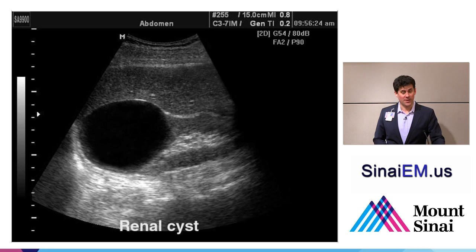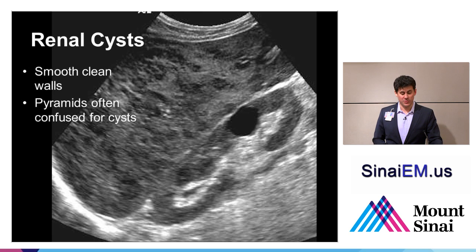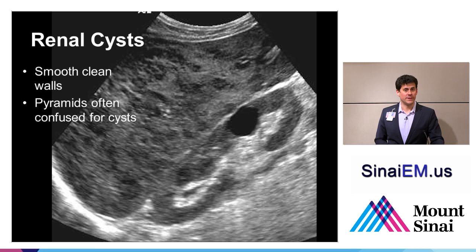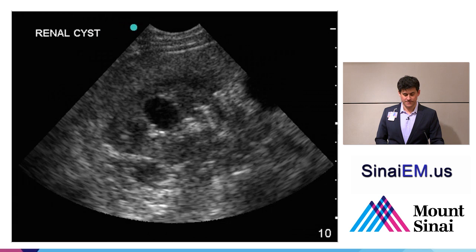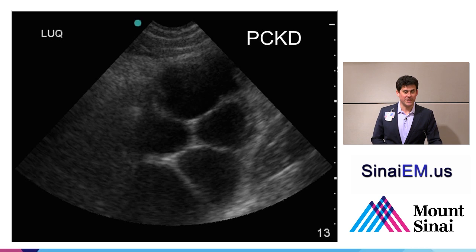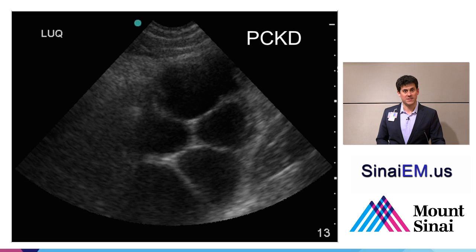Here's another example of a very large cyst — the rest of the kidney looks normal, there just happens to be a large cyst at the superior pole. Cysts typically have smooth, clean walls. You can confuse renal pyramids for cysts, but cysts are relatively circular or spherical across all three dimensions, while pyramids taper towards the center of the kidney. With polycystic kidney disease, there are so many cysts they do displace the renal parenchyma — an important finding with implications for renal function that warrants careful documentation and appropriate follow-up.